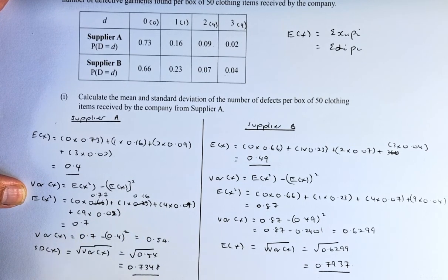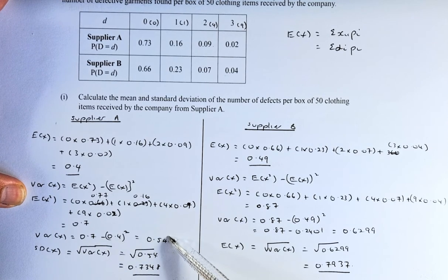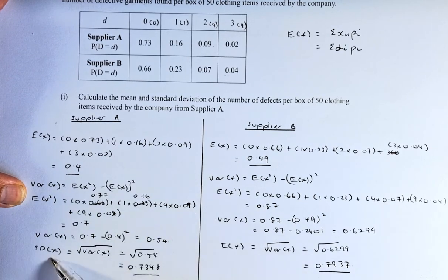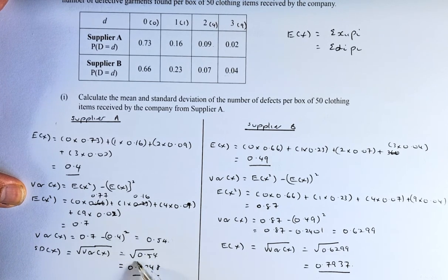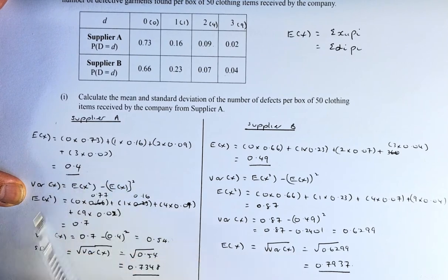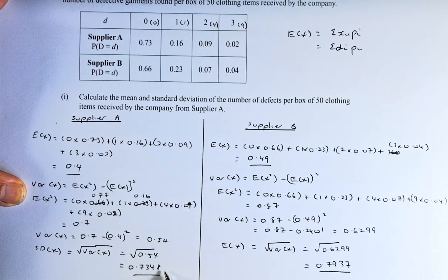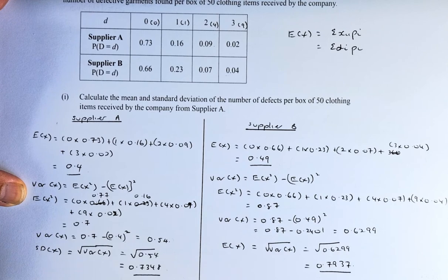To get the variance, you take 0.7 minus 0.4 squared. If you put in your calculator, the answer is going to be 0.54. And last but not least, to get the standard deviation, you need to square root the variance. So square root of 0.54 and the answer is going to be 0.7348. The mean for Supplier A is 0.4 and the standard deviation for Supplier A is 0.7348.